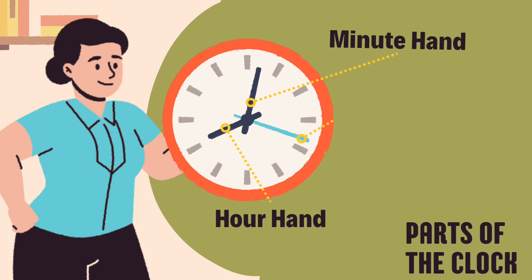The second hand is the thinnest hand on the clock and moves the fastest. It counts every second, and there are 60 seconds in a minute.